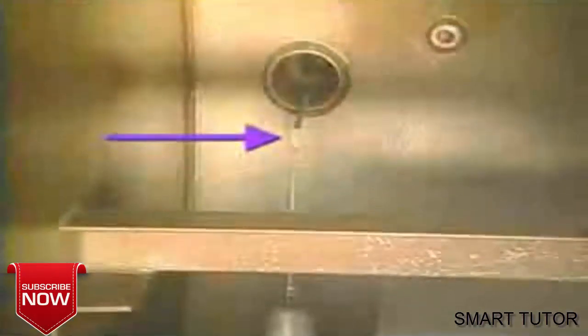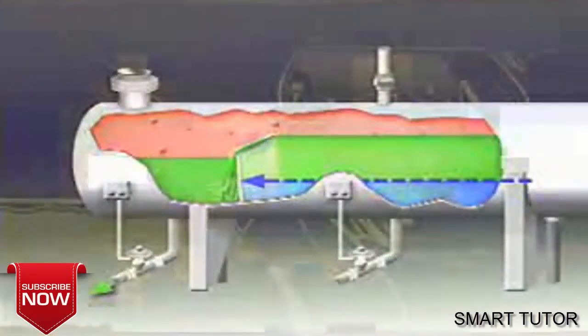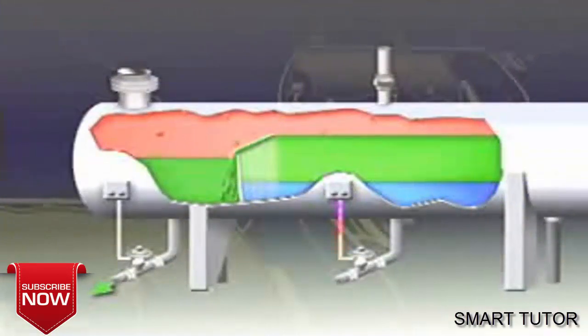An interface level controller senses the height of the oil-water interface. This controller signals the water dump valve to release as much water from the vessel as is needed to maintain the oil-water interface at design height.